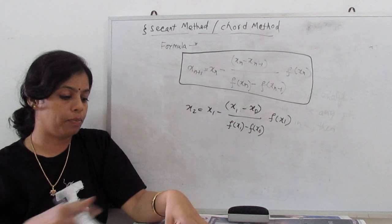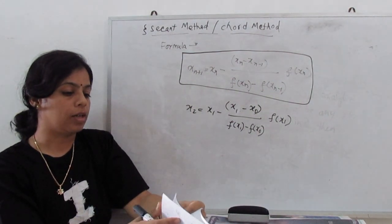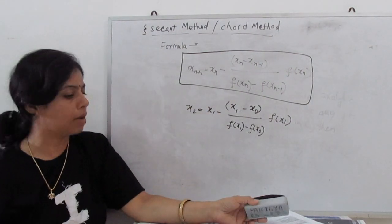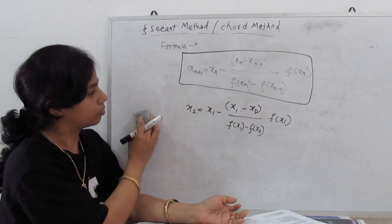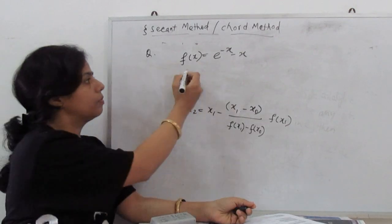I will show you one example of how to use this formula to solve the given equation. Question: Use the secant method to estimate the root of the equation f(x) = e^(-x) × x.